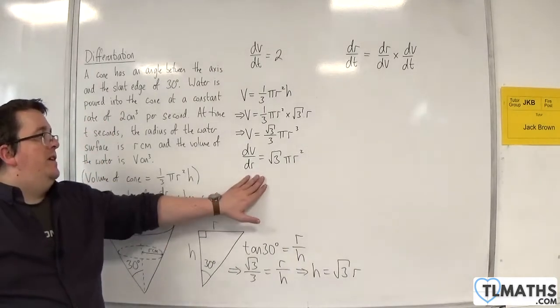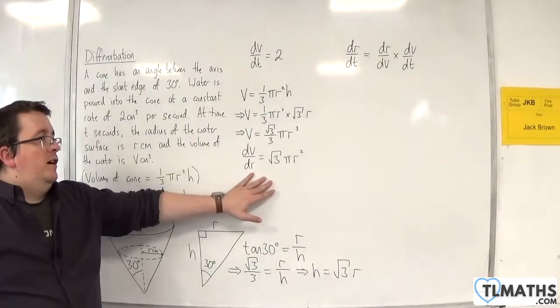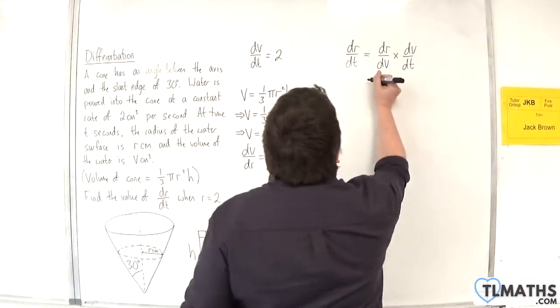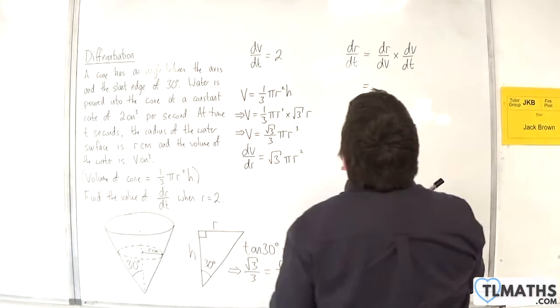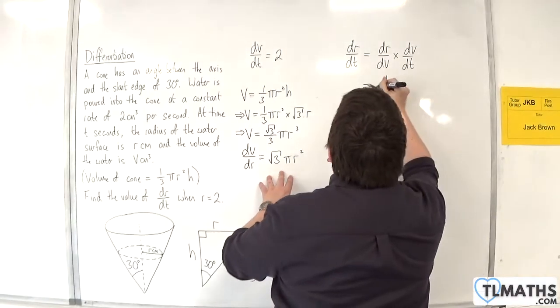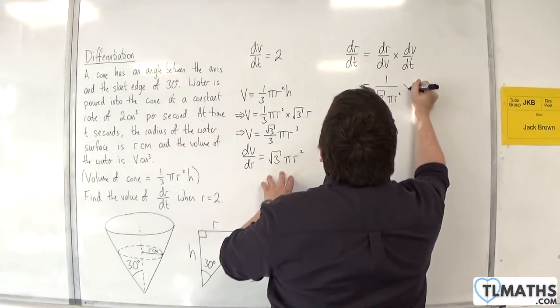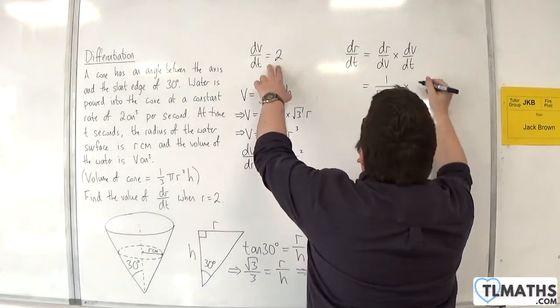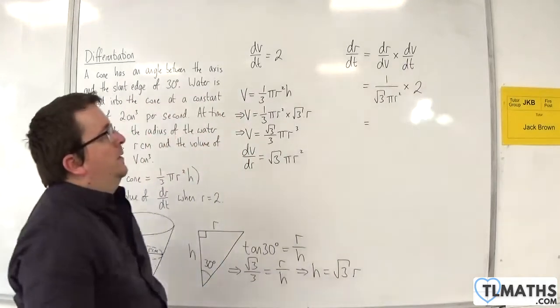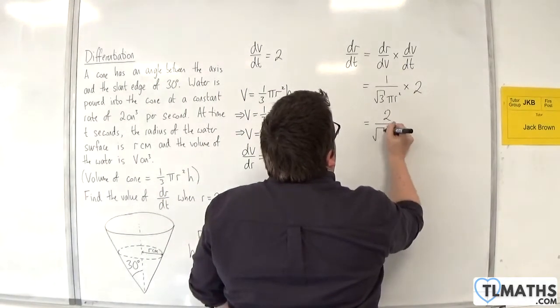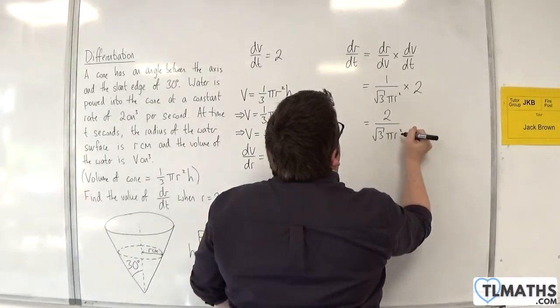Now I have dv by dr. I know that dr by dv is 1 over that. So I go back up here. dr by dt is going to be 1 over root 3 pi r squared times by dv by dt, which was 2. This is 2 over root 3 pi r squared.